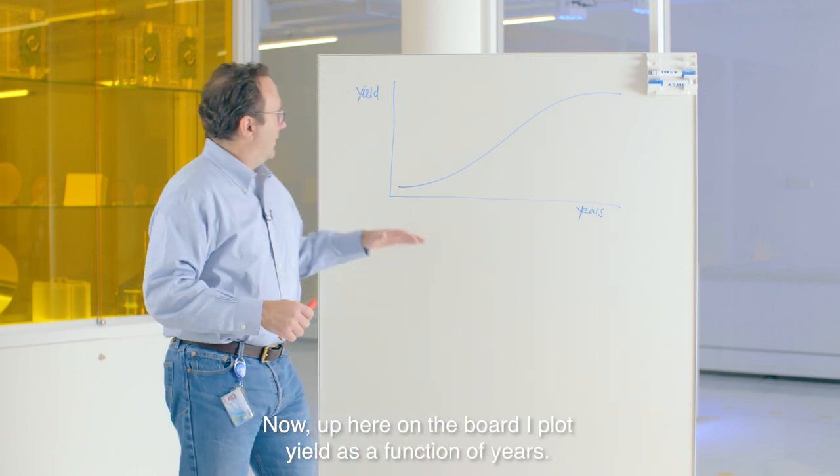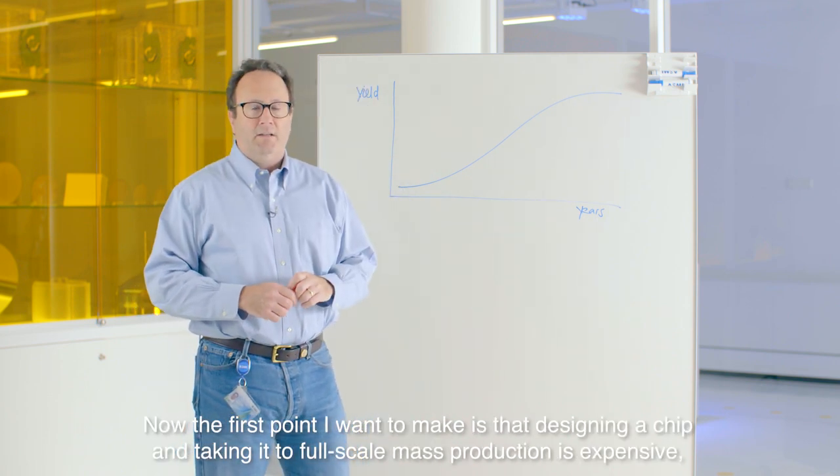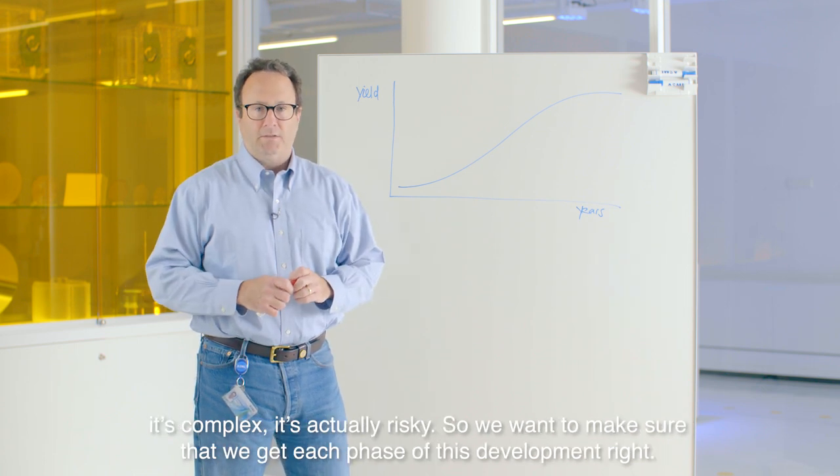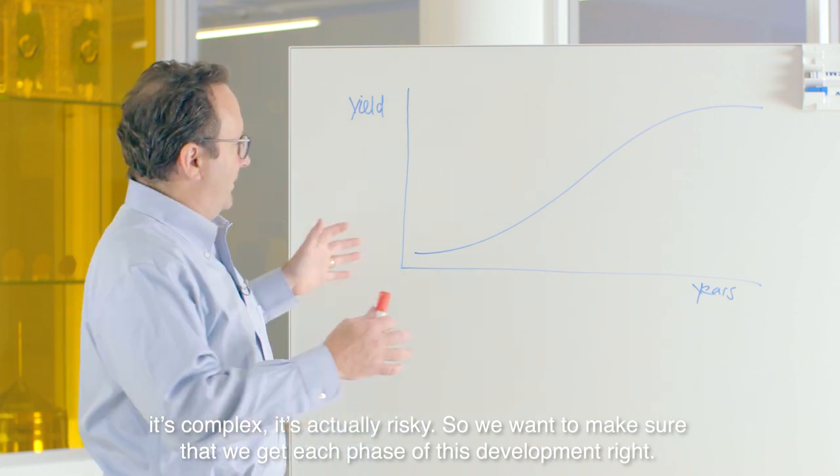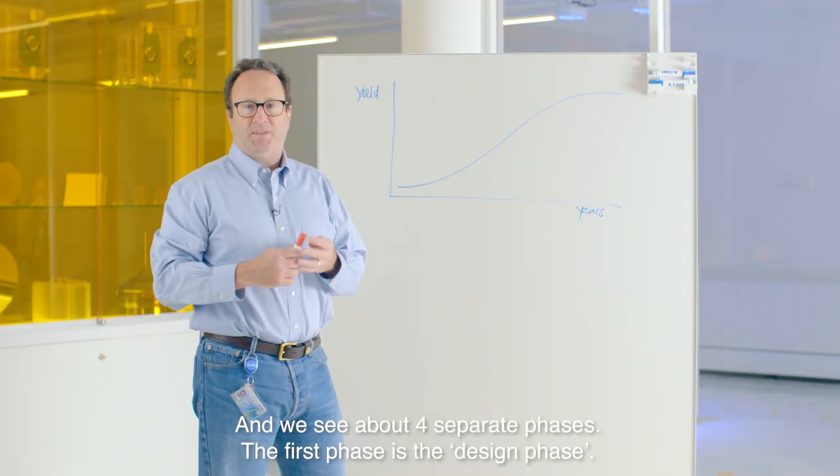Now, up here on the board, I plot yield as a function of years. The first point I want to make is that designing a chip and taking it to full-scale mass production is expensive, complex, and risky. So we want to make sure that we get each phase of this development right, and we see about four separate phases.